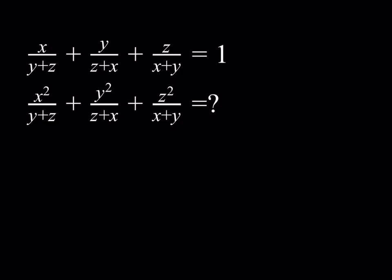So we're given that x over (y plus z) plus y over (z plus x) plus z over (x plus y) is equal to 1, and we're supposed to evaluate x squared over (y plus z) plus y squared over (z plus x) plus z squared over (x plus y).